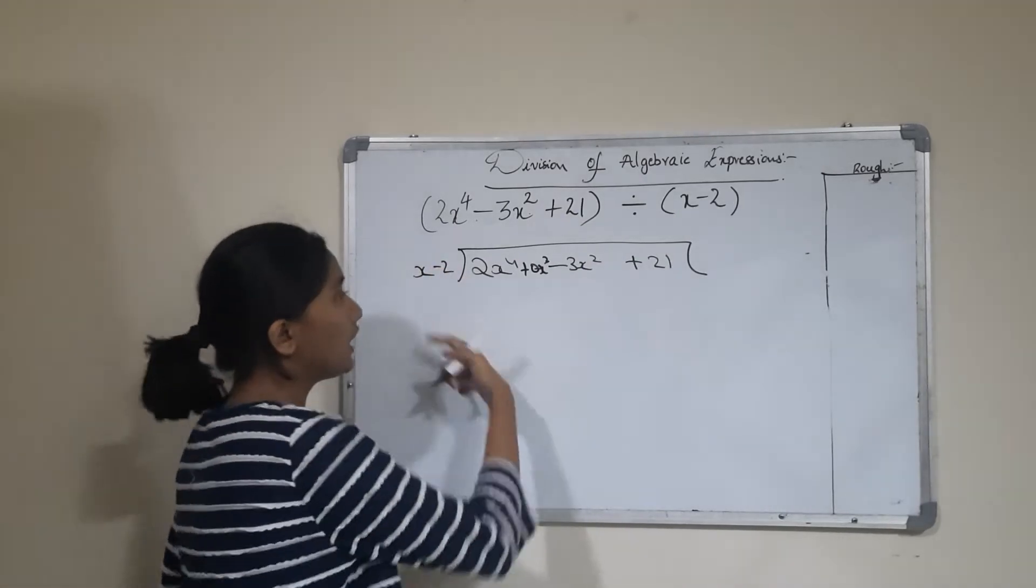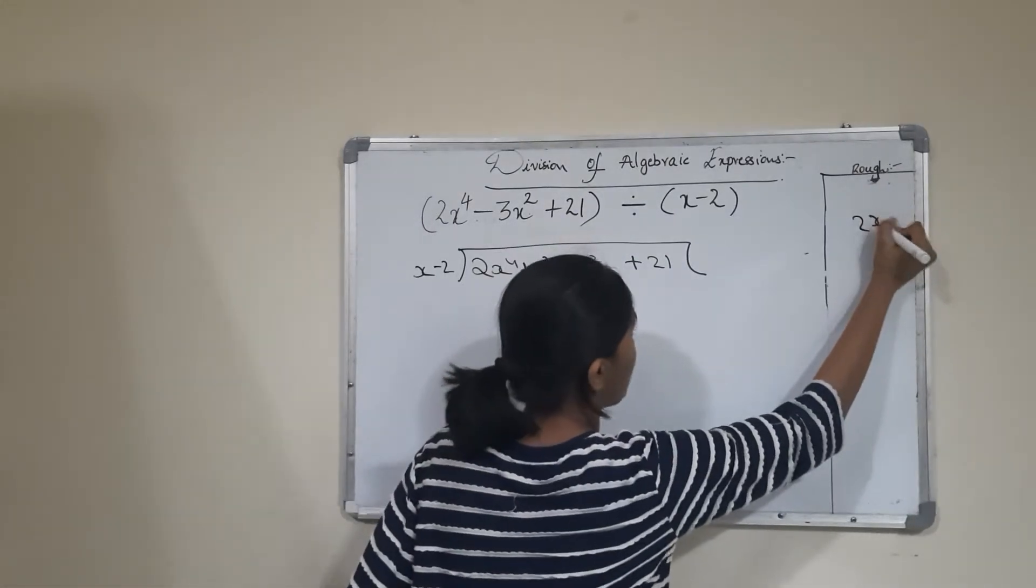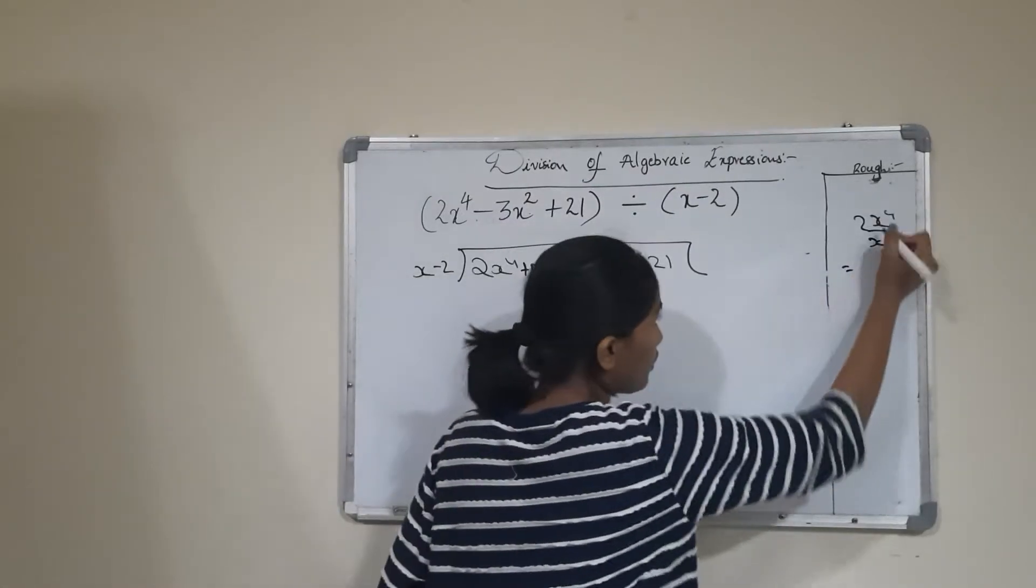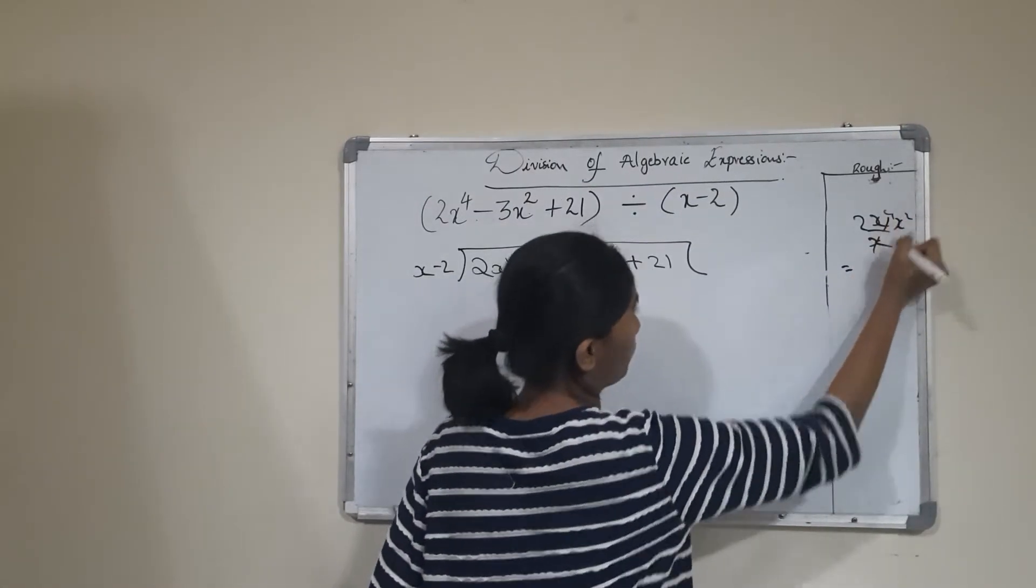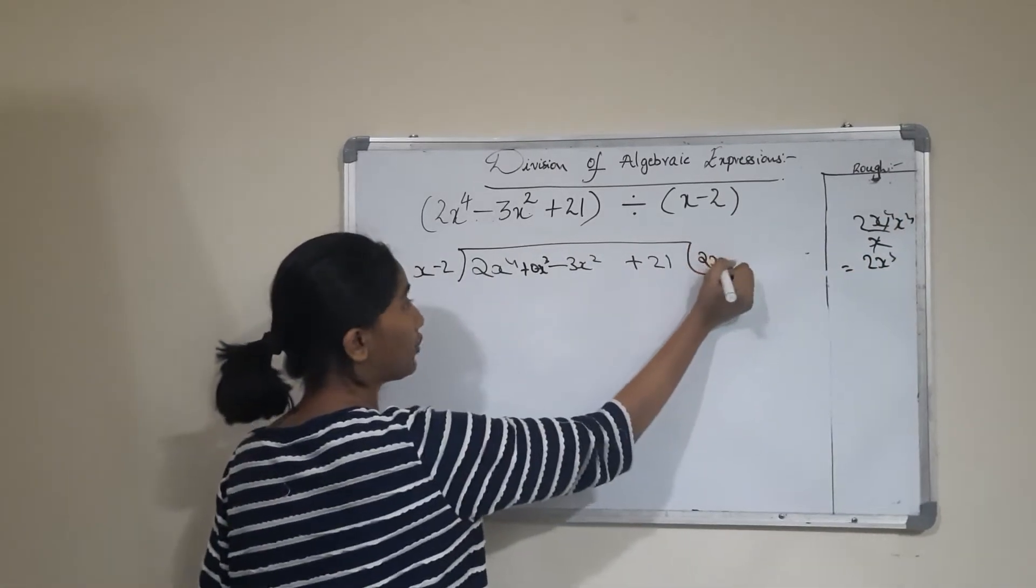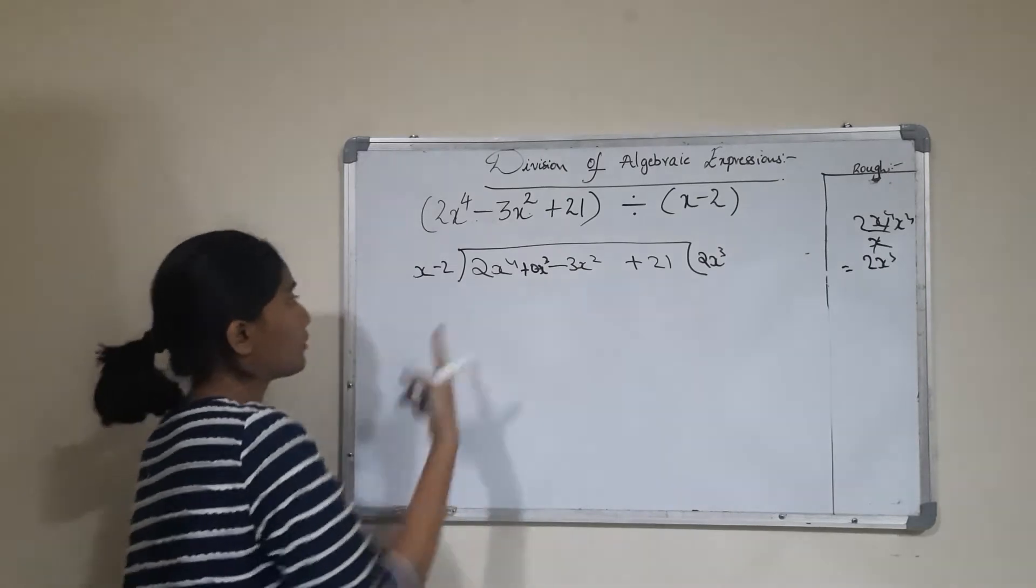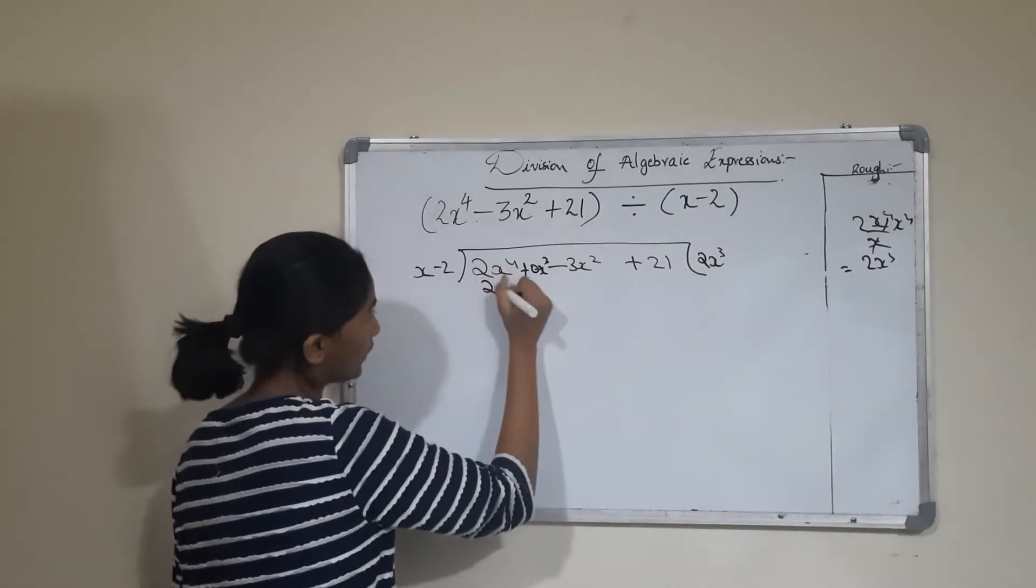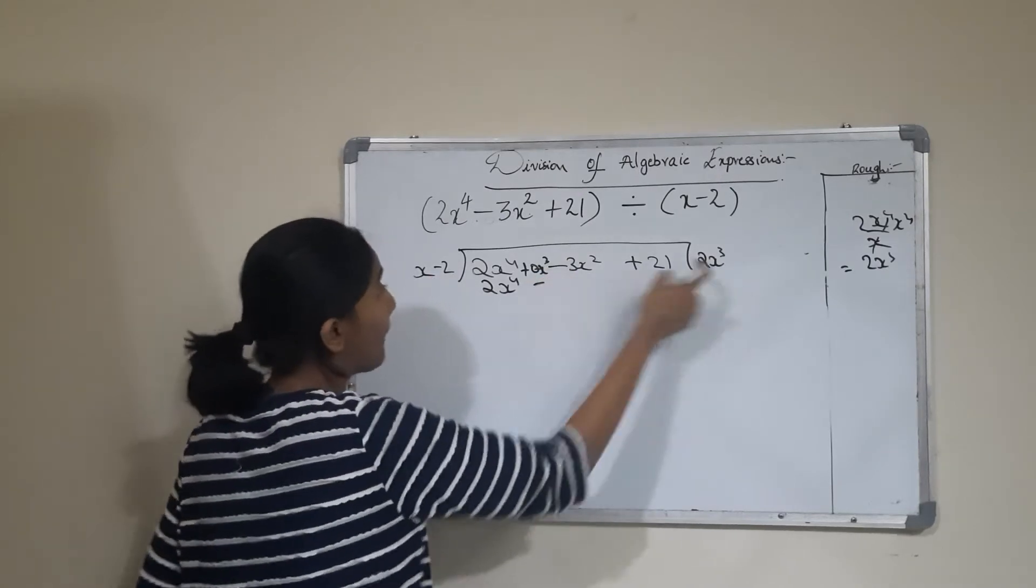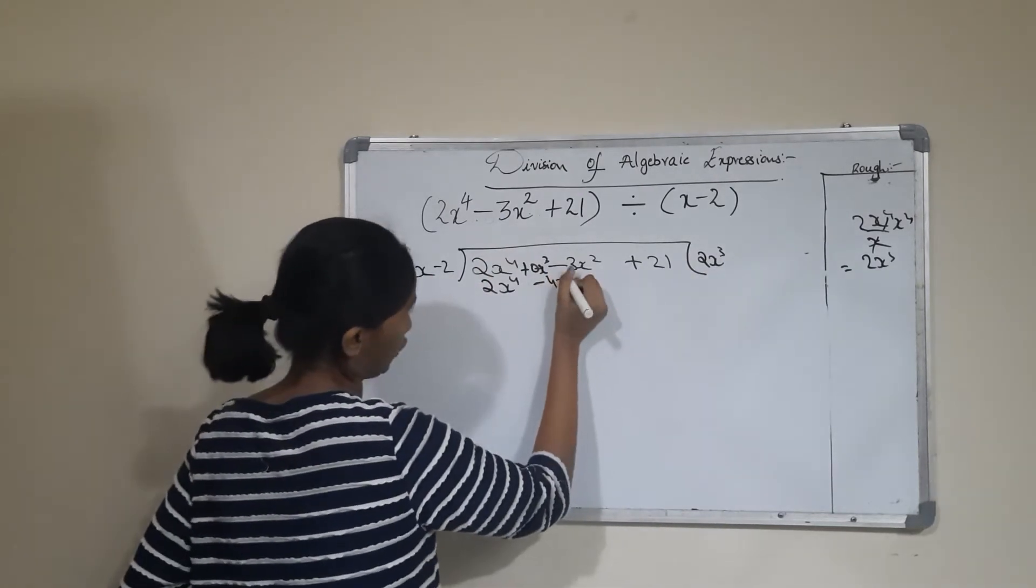First, divide 2x^4 by x to get 2x^3. I'll write 2x^3 here because 2x^3 times x equals 2x^4. Now multiply 2x^3 by -2 to get -4x^3.